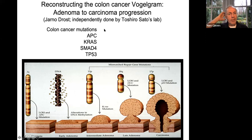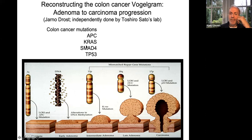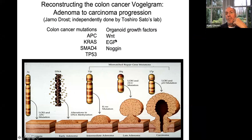You can also use organoids to model cancers. This was done in my lab by Jarno Drost but also simultaneously and independently by Toshiaki Sato — we both had the same ideas and were fortunately published simultaneously. We both realized that the most common mutations in colon cancer — specifically the top three genes — reflect exactly what we had empirically found to be the key signaling pathways for normal colon stem cells. We need Wnt plus R-spondin, EGF for colon organoids, and Noggin as a BMP inhibitor.